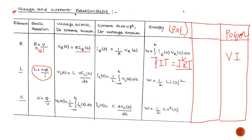If you want the current through the inductor, integrating both sides gives I = (1/L)∫V_L dt. The energy stored in the inductor is ½LI². The resistor dissipates energy as heat, whereas the inductor stores energy in the form of a magnetic field.